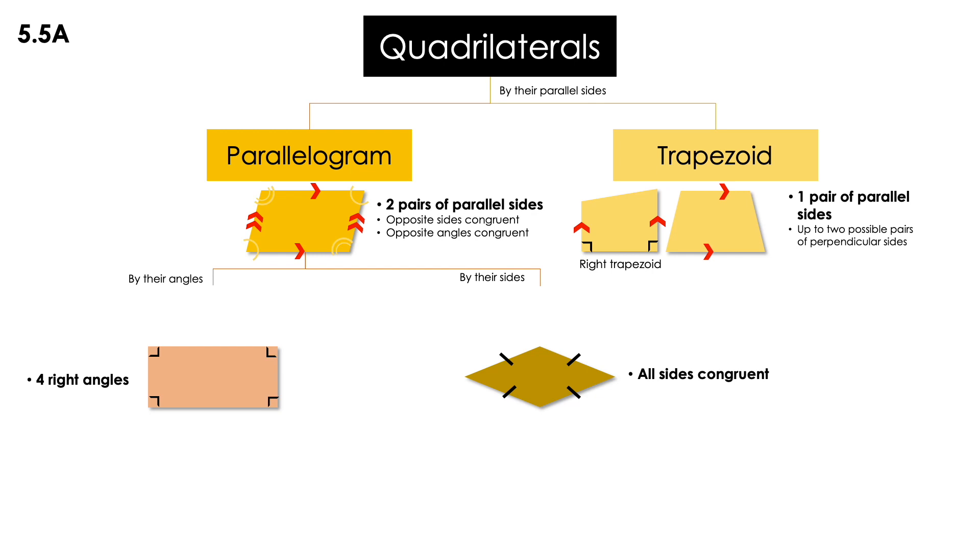So, with that being said, if you have a parallelogram that has four right angles, this one is going to be a rectangle. If you have a parallelogram that has all sides congruent, this is going to be a rhombus.